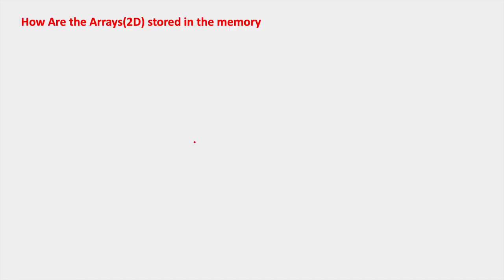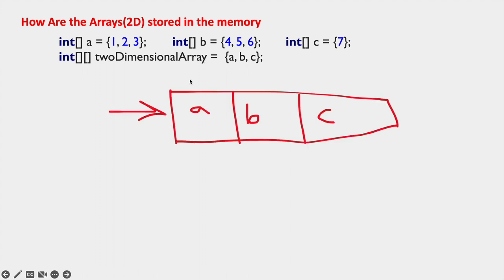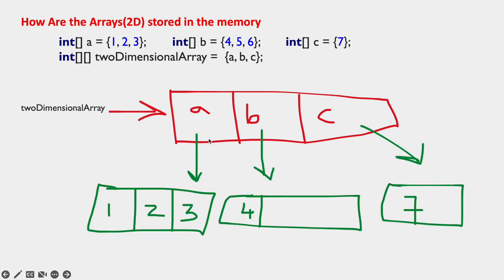How are two-dimensional arrays stored in memory? Let's see an example. int a = {1,2,3}, b = {4,5,6}, c = {7} — we have created three one-dimensional arrays. We use these when creating two-dimensional array {A, B, C}. An object will be created for the two-dimensional array with size 3 — index 0, 1, 2. The 0th position holds object A, the first index holds object B, and the second index holds object C. So A represents 1,2,3; B represents 4,5,6; and C represents 7.